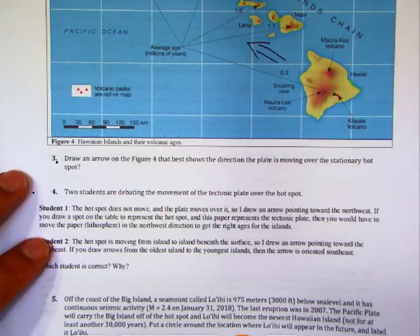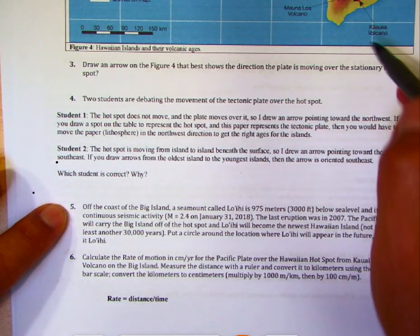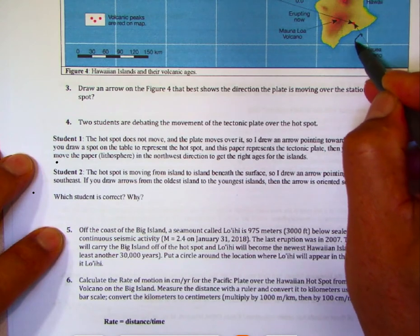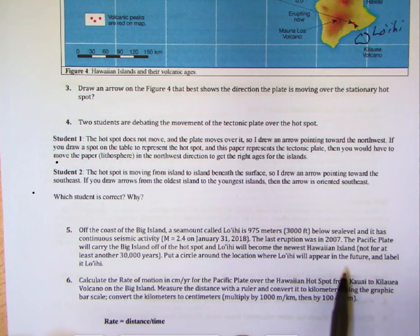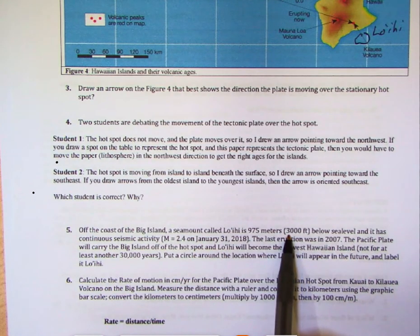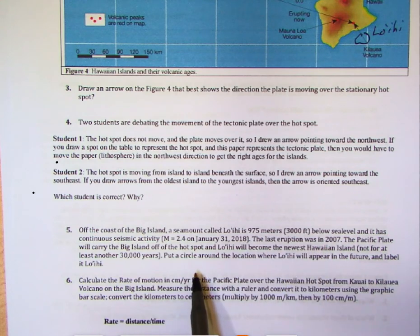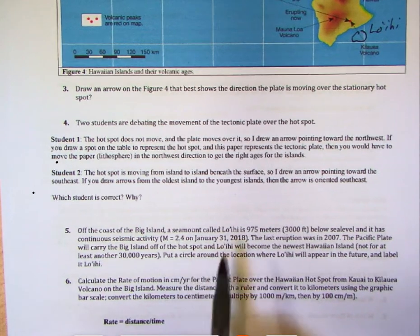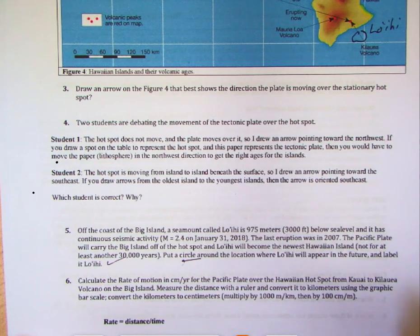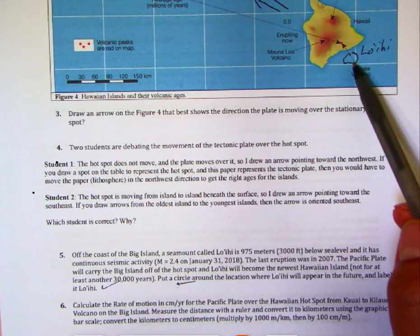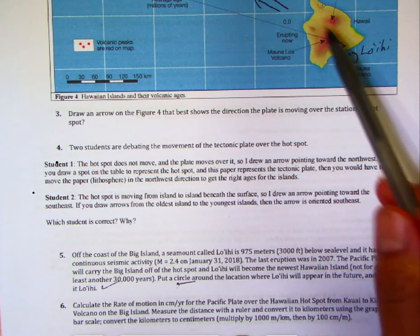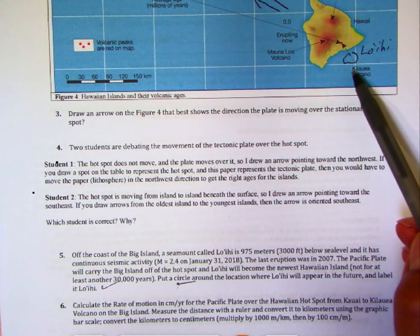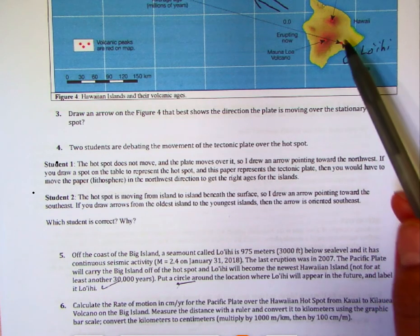There is an underwater volcano called Loihi in this region, still about 3,000 feet below sea level but active, with lavas erupting from it. Over time, as more eruptions occur, Loihi will eventually become an island. Because the Big Island of Hawaii is being carried off the hotspot, Loihi will be the next Hawaiian island to replace it.